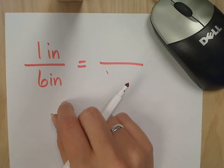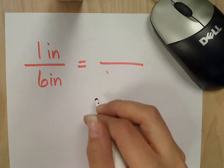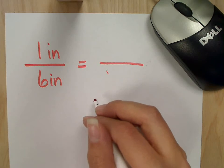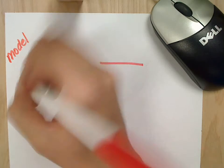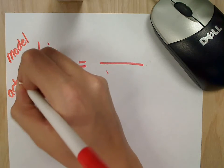Well, let's think. If it's inches, is that the model size or actual size? Model. Model, because it's smaller and then the actual size is going to be the 16. And just like before, we set it up this way. Model was the top number and actual was this bottom one.